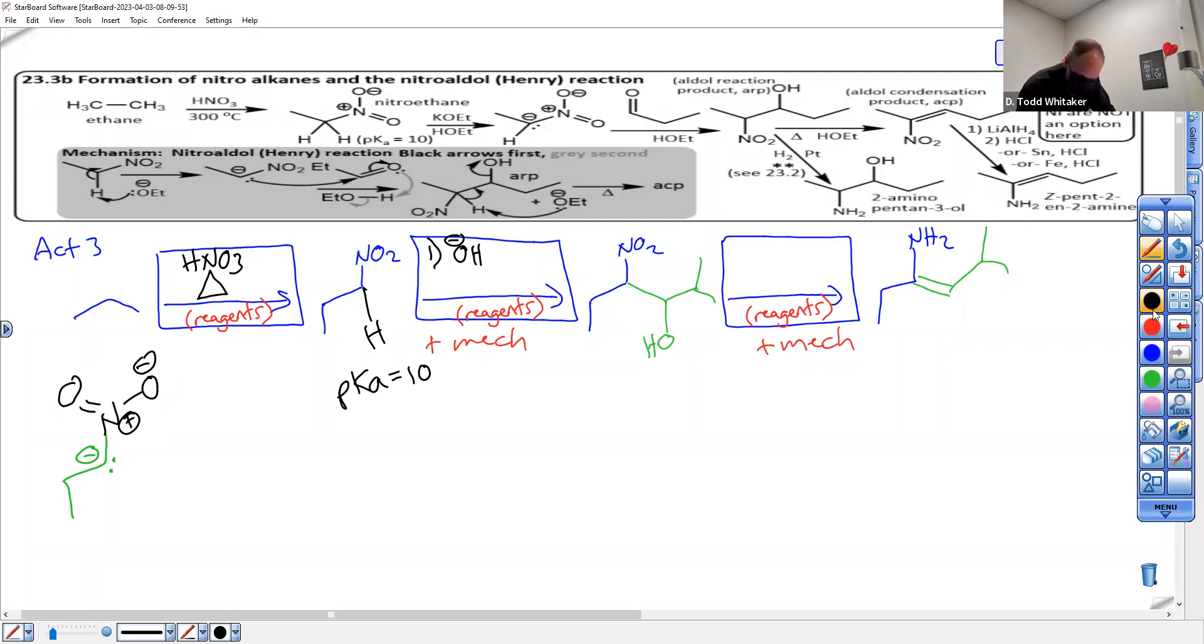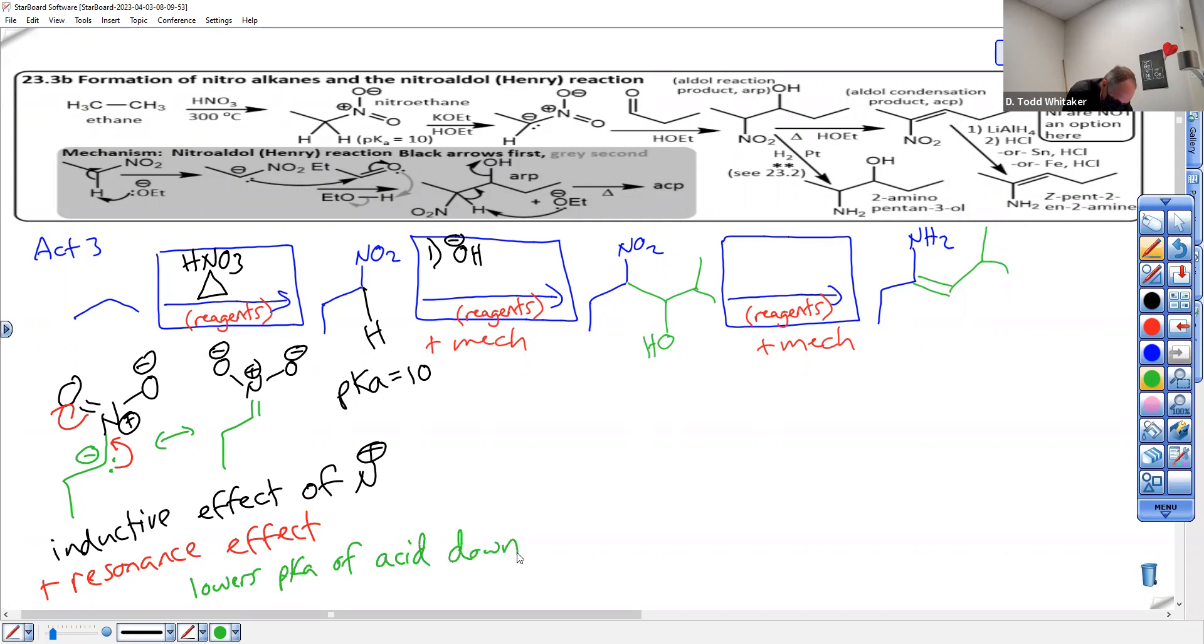And it can resonate. So inductive effect of N plus, resonance effect. Here's the resonance effect. Zwitterion up there lowers pKa of conjugate acid down to 10. Notice when I'm explaining why acids are strong, I'm always talking about the conjugate base. This is the conjugate base. You always need to talk to me about the stability of the conjugate base when you're talking about acid strength.